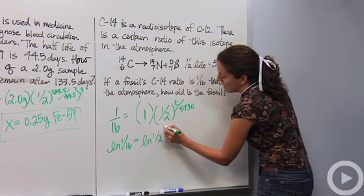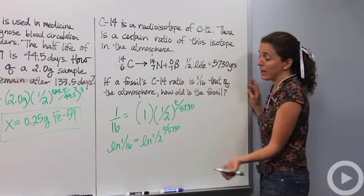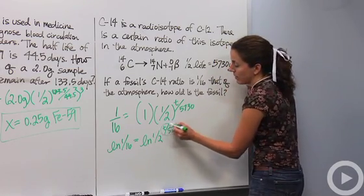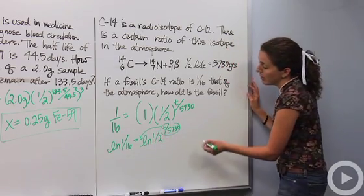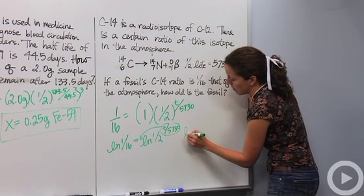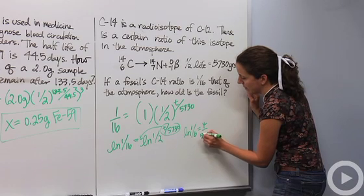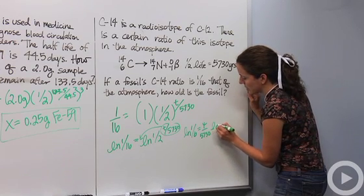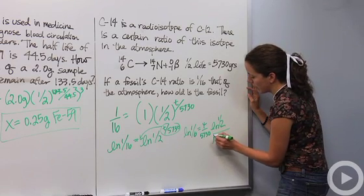Natural log of one-half times t over 5,730. So with natural log I can take this exponent and put it in front, so now it is not an exponent anymore. So now I'm going to say, okay, the natural log of one-sixteenth is equal to t over 5,730 times the natural log of one-half. So I'm going to divide by the natural log of one-half.